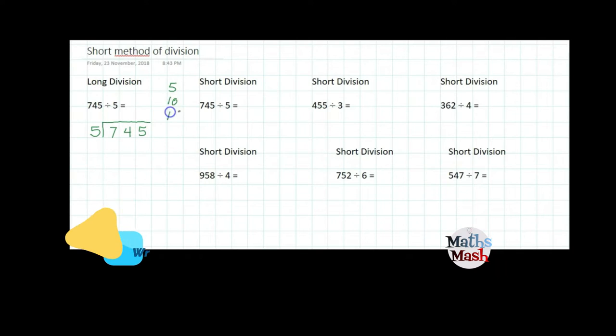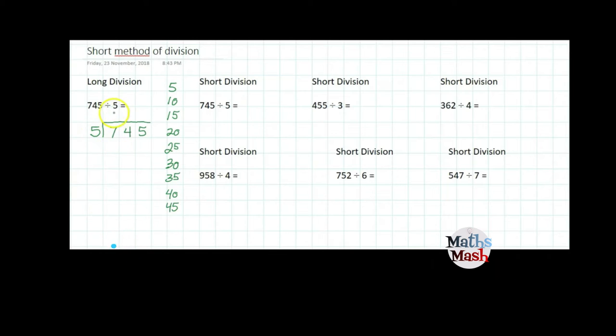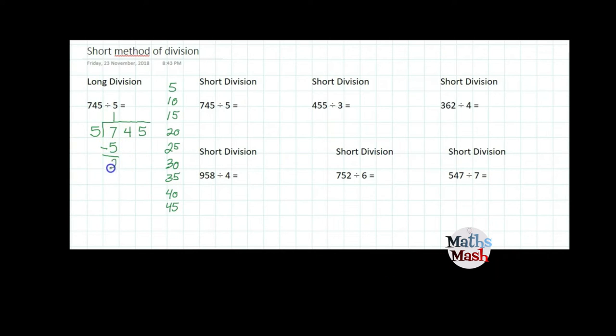I always write my multiples and my divisor down the side so I'm writing the 5 times table or the multiples of 5 down the side here. The first thing I do is say how many sets of 5 go into 7, that's 1. I write my 5 right below my 7 and I subtract 5 from 7, that leaves me 2 and I bring down my 4 that gives me 24.